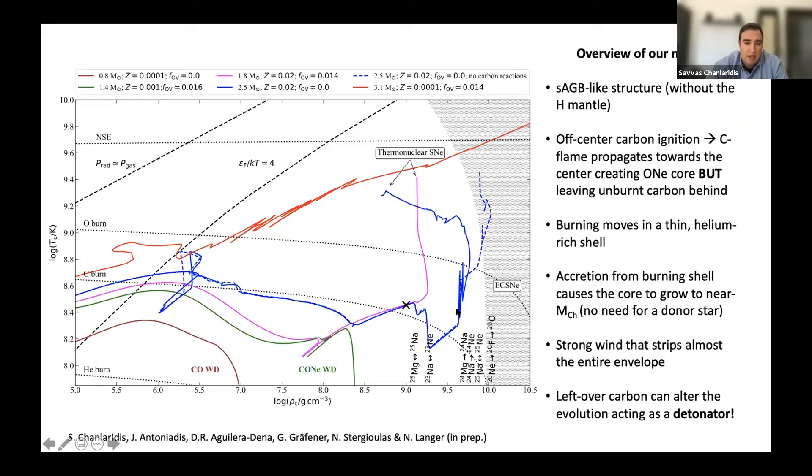However, when the density reaches another critical value, which is the density for electron captures on magnesium-24 this time to occur, things are starting to take a different turn. The energy release from this weak reaction is enough to ignite the residual carbon, which in turn will ignite oxygen explosively and create a thermal runaway at much lower densities compared to the model that features no residual carbon. And this ignition density is important because it can affect the whole explosion dynamics.